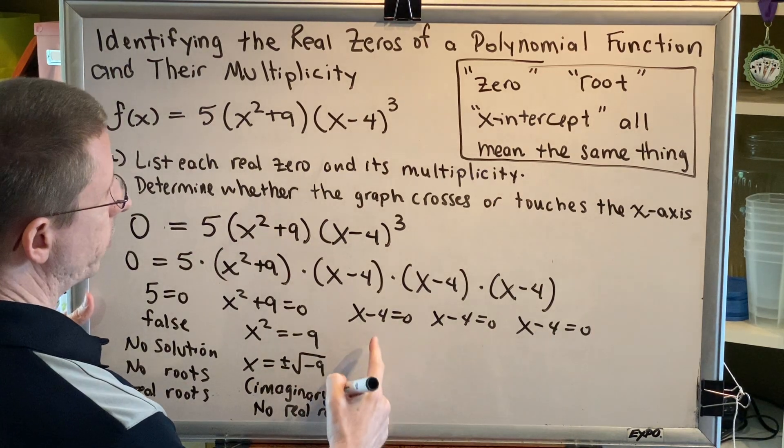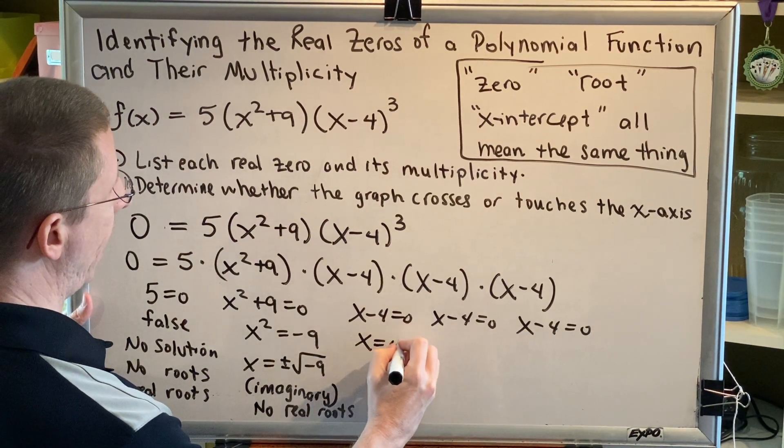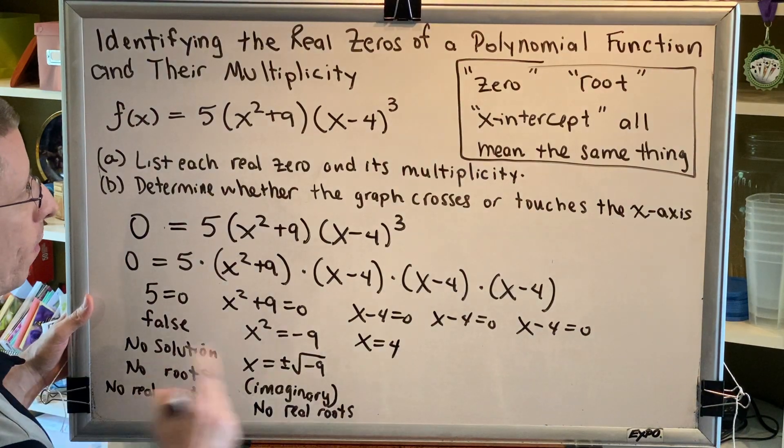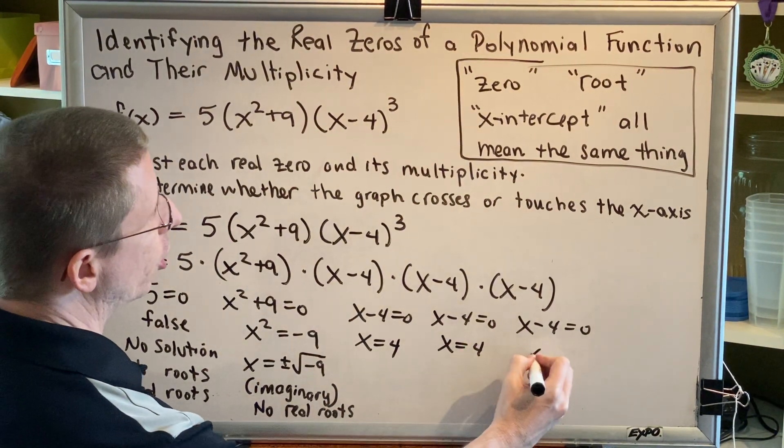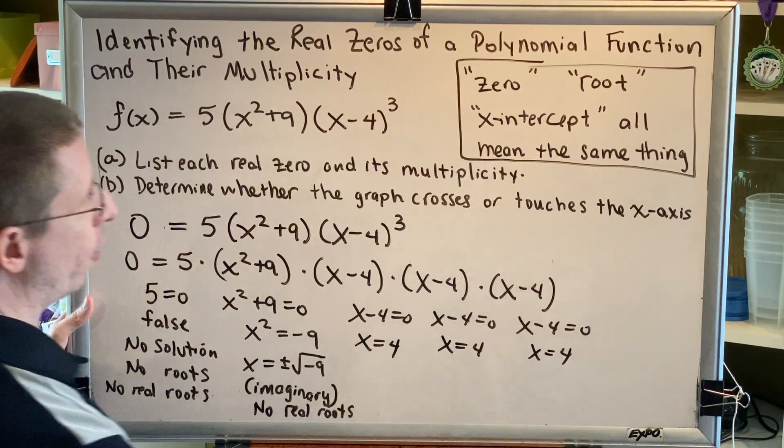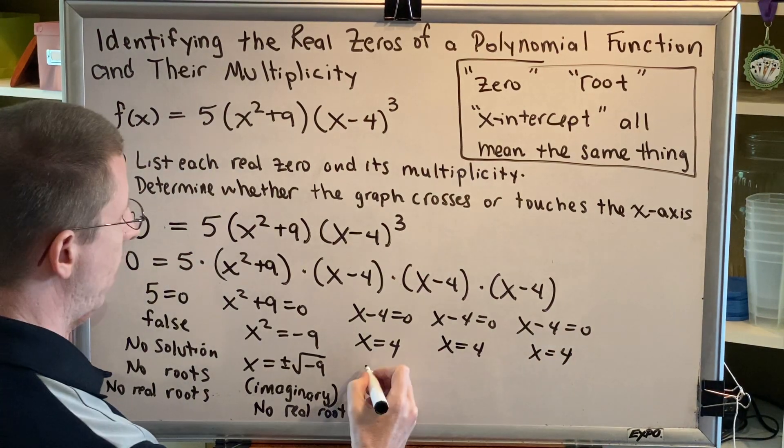Third equation: x minus 4 equals zero. Add 4 to both sides, we get x equals 4. That's a real number, so that's a real root. And because we have that same equation three times, we get the root 4 three times.